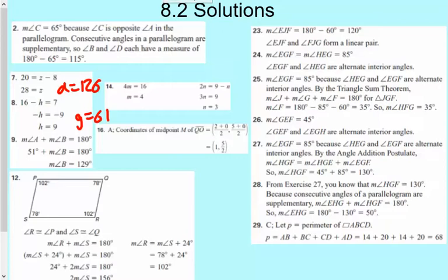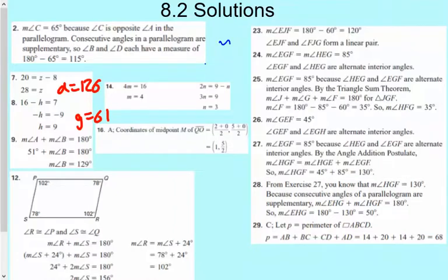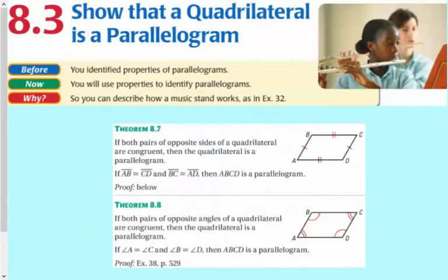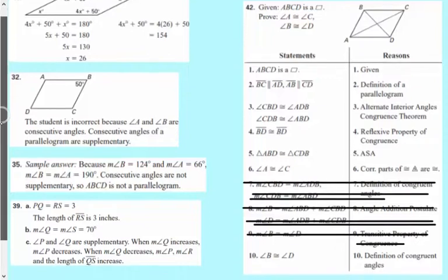Hello, welcome to section 8.3. In 8.2 we were taking a look at the properties of parallelograms. So if something was a parallelogram, it had a lot of different properties to it. Today we're going to go the backwards way and prove quadrilaterals are parallelograms.